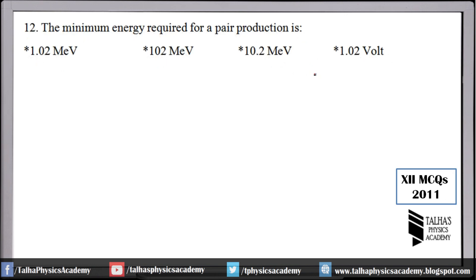Number 12: the minimum energy required for pair production is 1.022 mega electron volts. Remember this constant value. Note that mega electron volt is a unit of energy, whereas volt is a unit of voltage — do not confuse the two. The answer is 1.022 MeV.